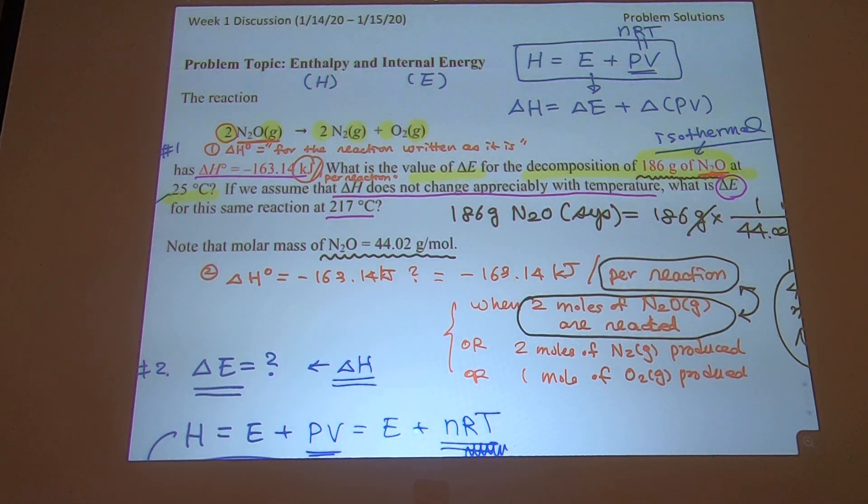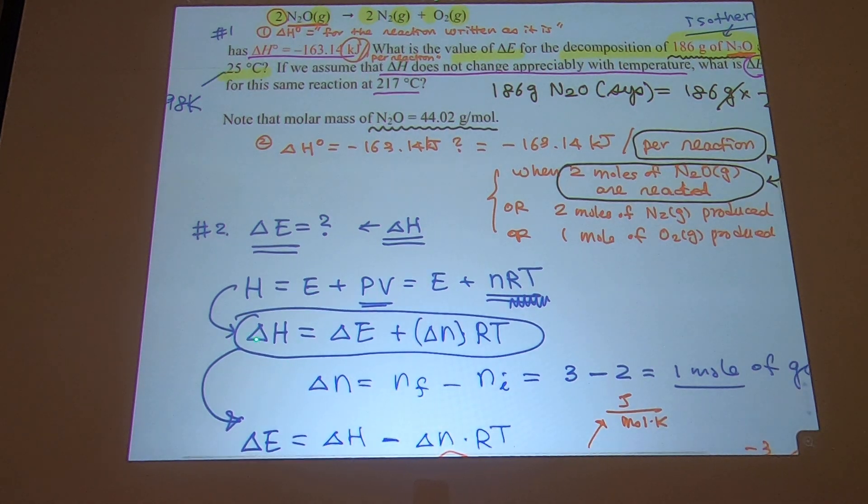And then now Delta H is Delta E related to Delta N. When the temperature is constant, when temperatures vary, it's a different, more complicated problem. But when things are isothermal, it's very easy because you can use this equation. Only the changing is Delta N, not the T. So everything else is constant and you can easily switch back and forth.